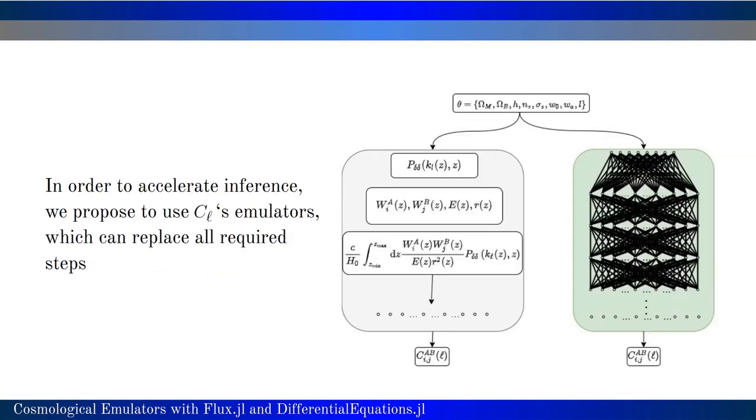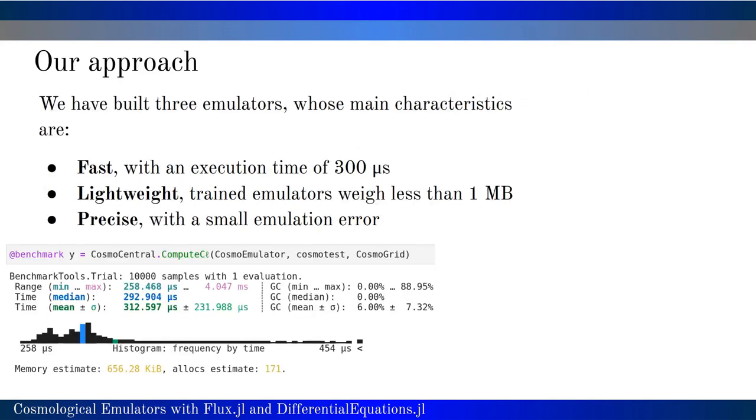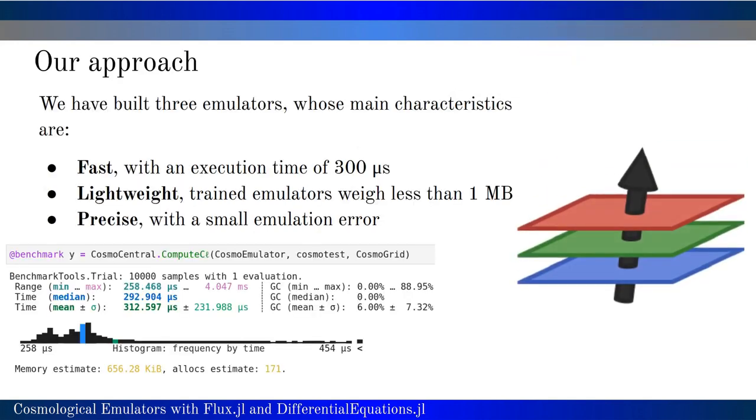In order to evaluate those correlation functions, we need to compute several intermediate quantities, and this is quite time consuming to map the input cosmological parameters to the CLs, the observations. We want to replace this entire pipeline with a feed-forward neural network. In particular, we have built three emulators.